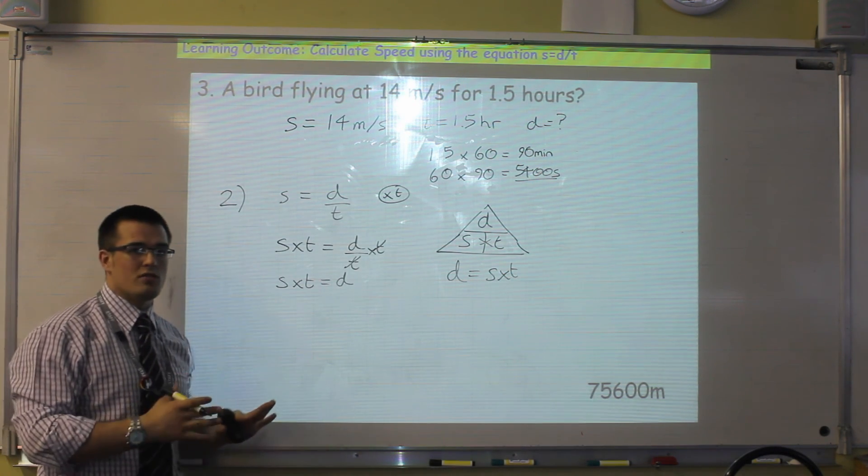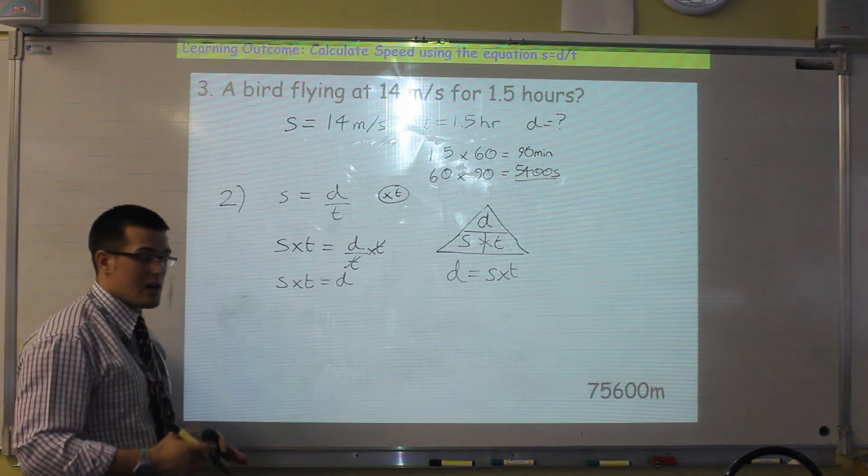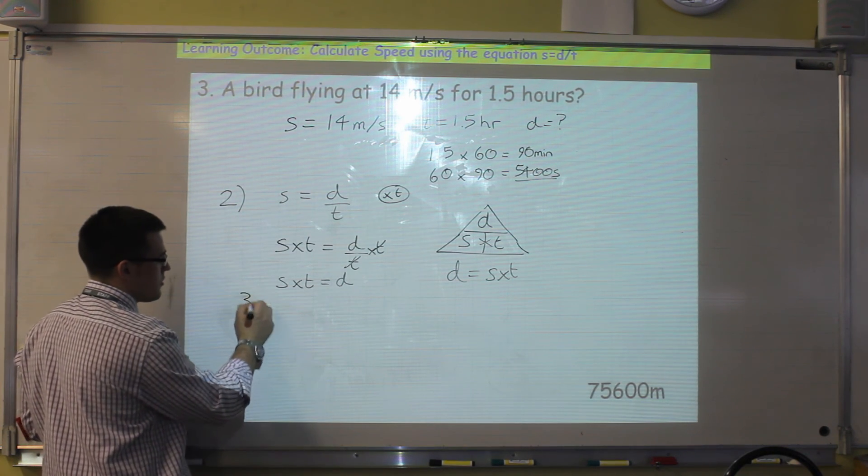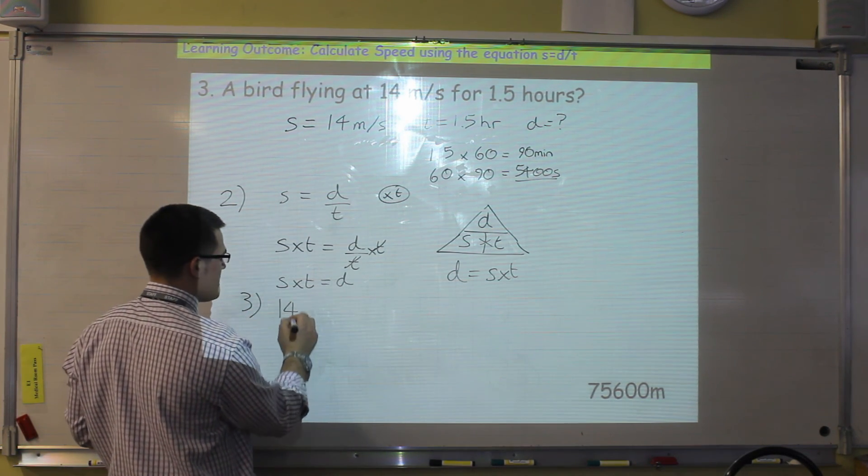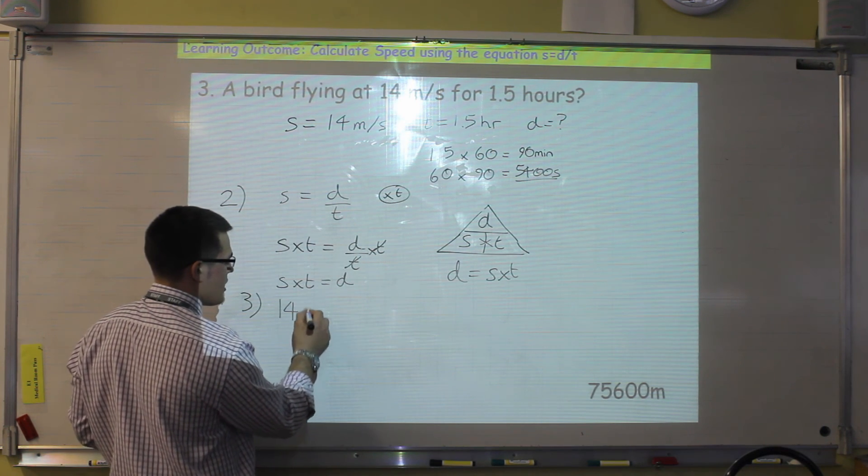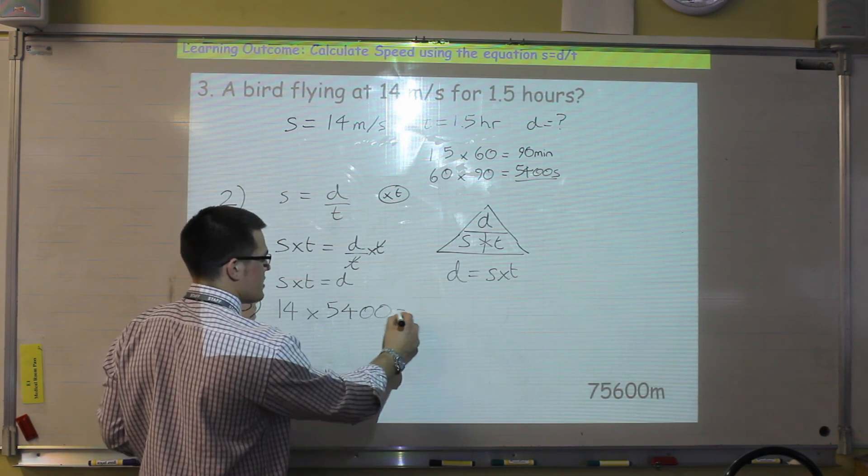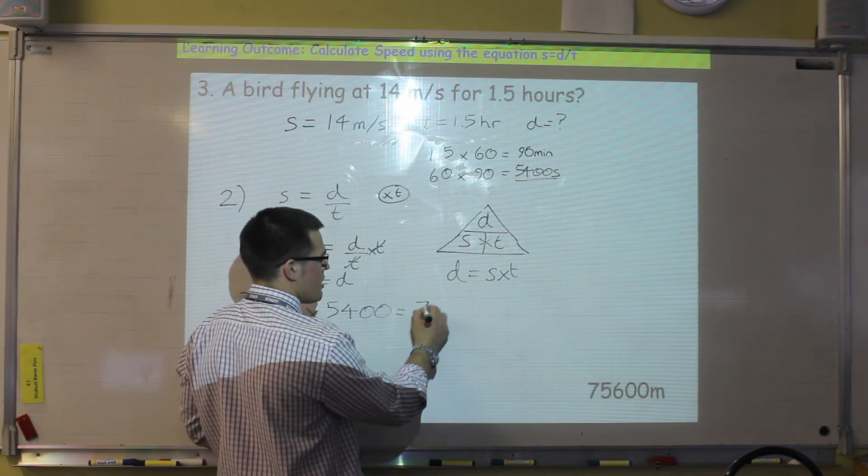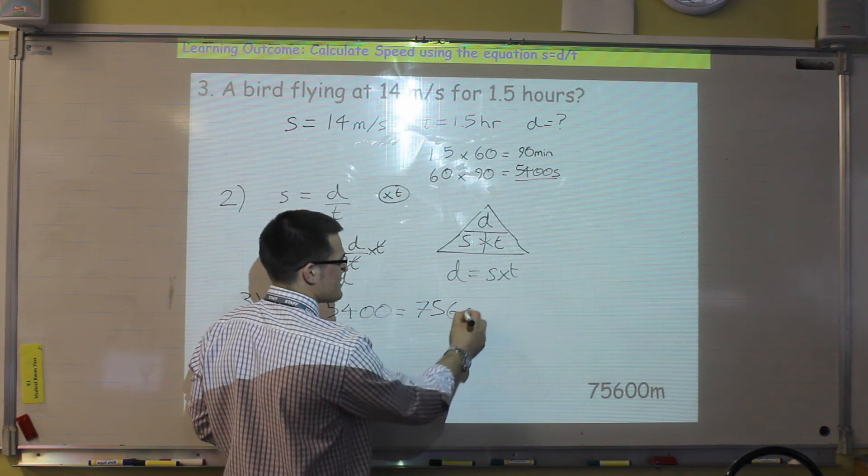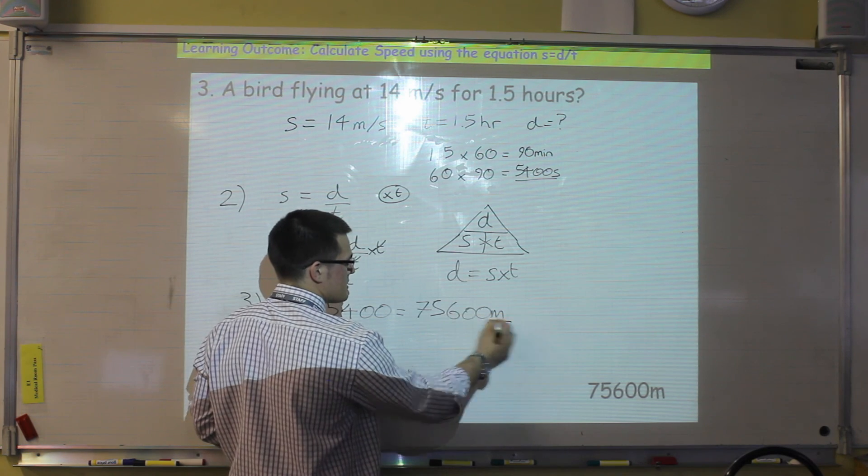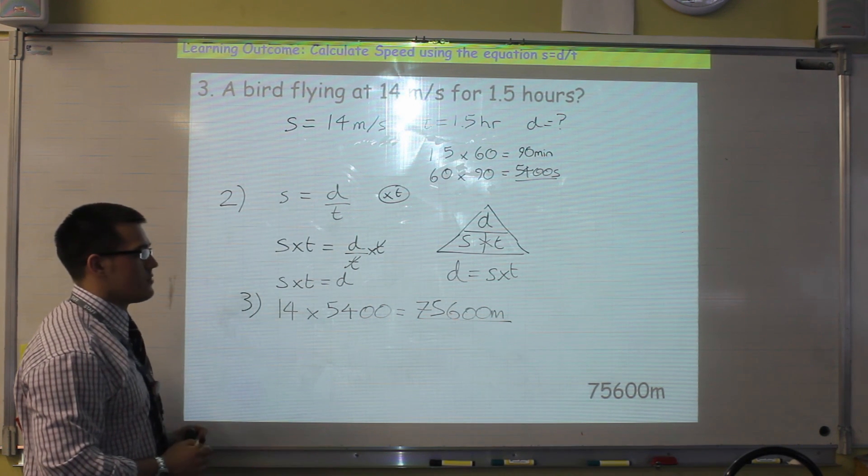The final step is to put the numbers in. So step number three is 14 meters per second multiplied by 5,400 seconds will give me a distance of 75,600 meters. And that's the distance the bird has travelled.